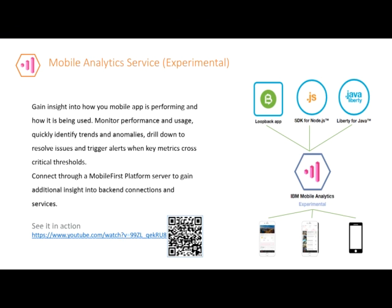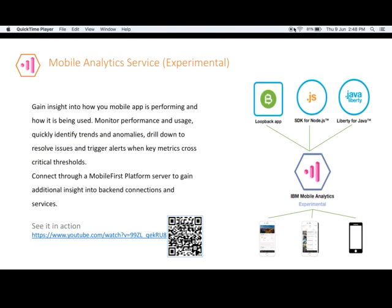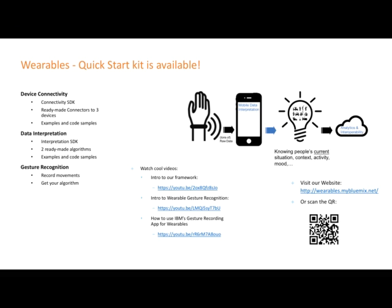Mobile Analytics service allows developers, IT administrators, and business stakeholders to get insight into how their mobile app is performing and how it is being used. You can monitor performance and usage, quickly identify trends and anomalies, drill down to resolve issues, and trigger alerts when key metrics cross critical thresholds. The Mobile Analytics service also allows you to connect through a Mobile First Platform server to gain additional insight into back-end connections and services. The service also gives you a quick-start kit to work with its variable connectivity SDK, which makes it simple to connect with multiple and different wearable devices.